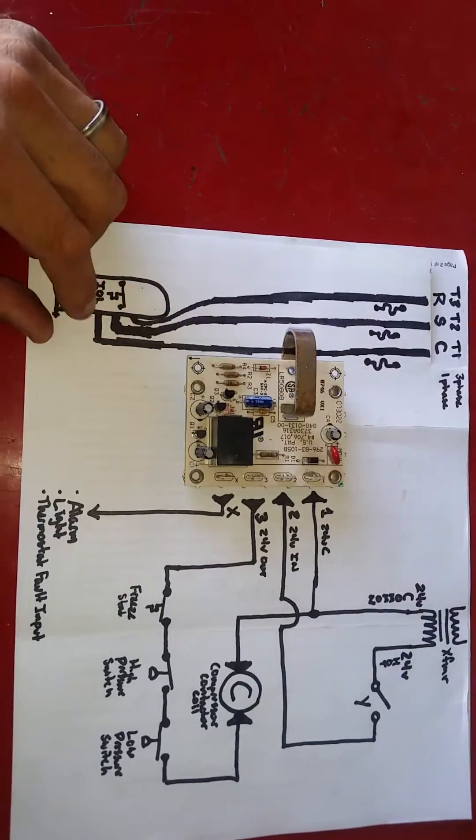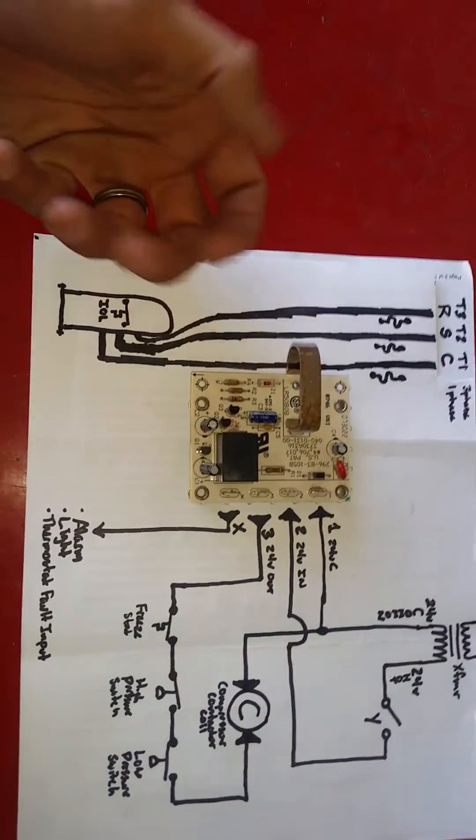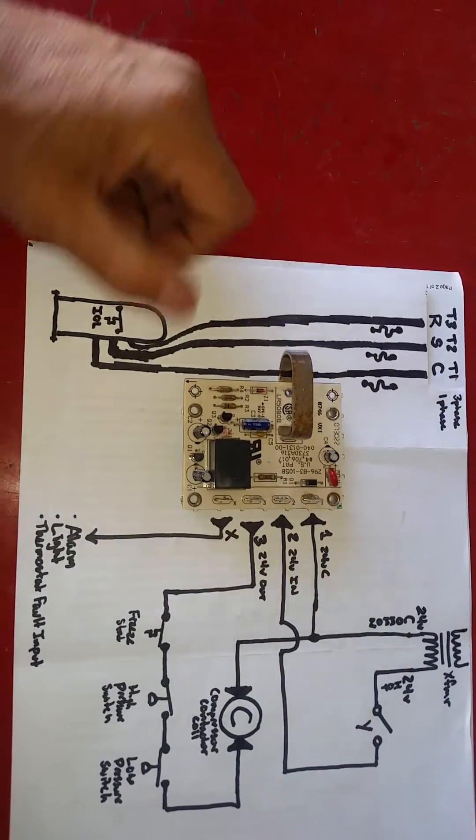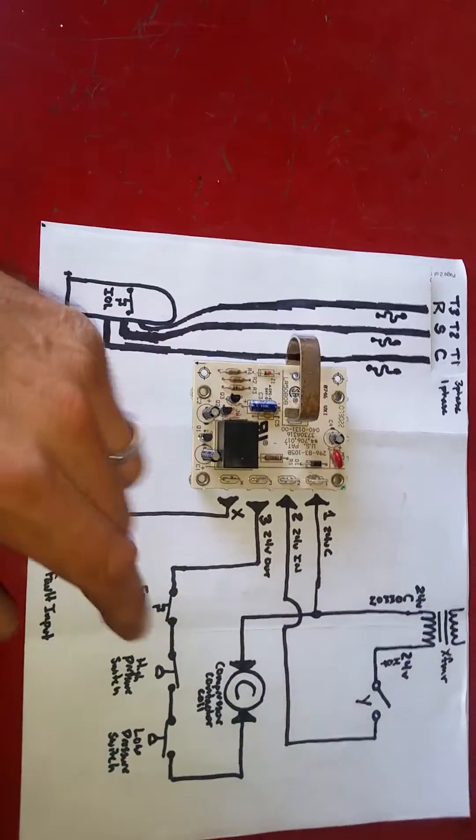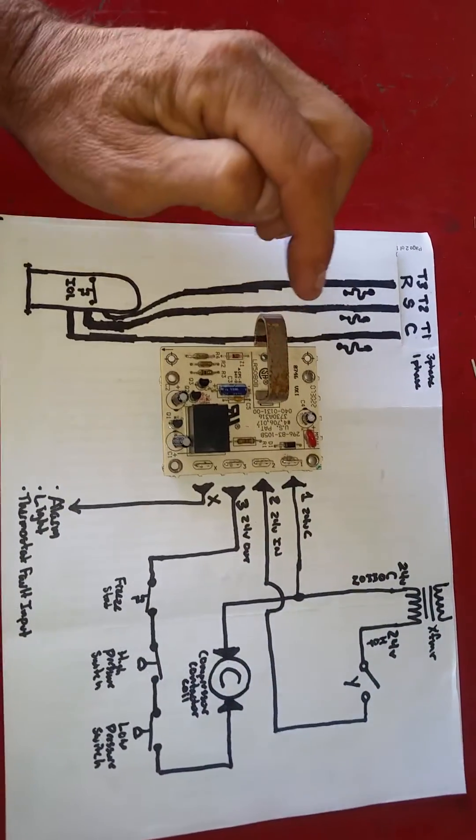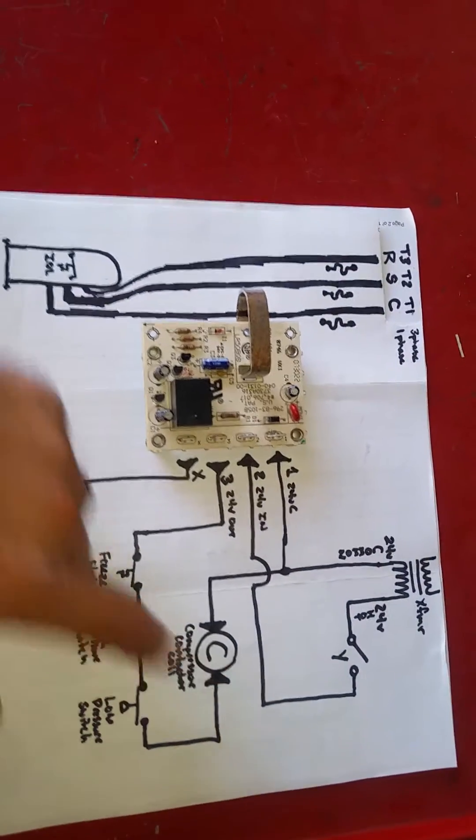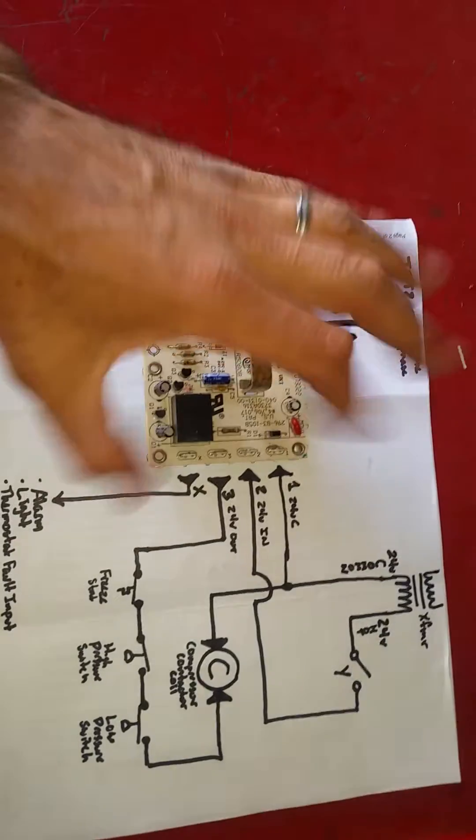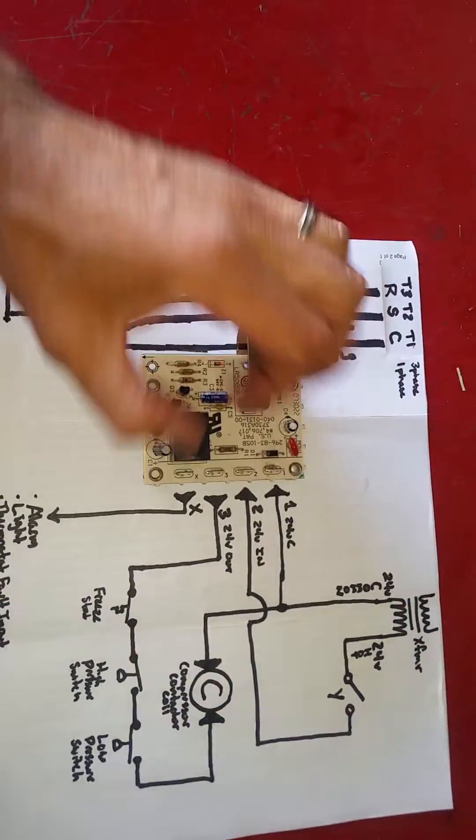We may also have an internal overload inside our compressor that opens, causing the compressor to shut down. It is no longer drawing current through the sensor. And again, the circuit may open. So in essence, a CLO, a current lockout is monitoring current. When the safety is open, the compressor shuts down, no current, lockout condition. If a fuse opens, no current, lockout condition.